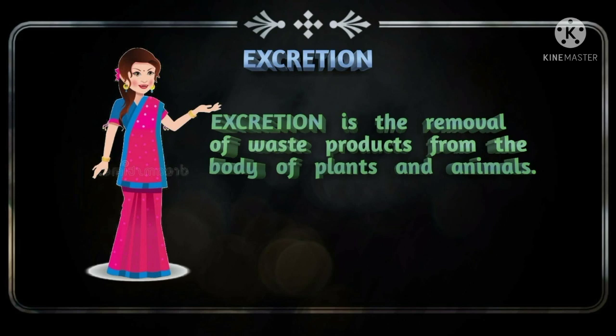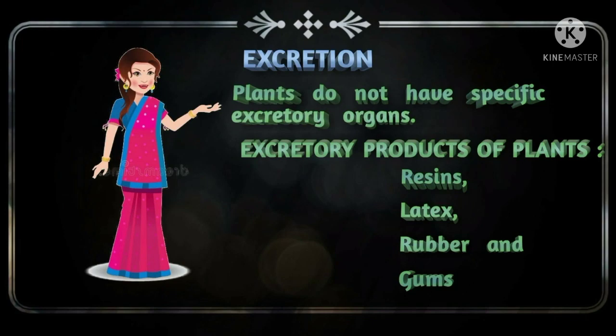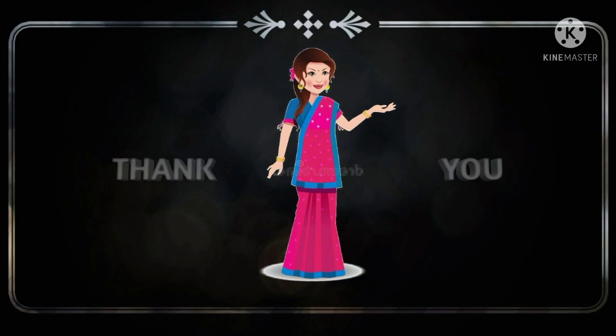The excretory organs in animals are skin, lungs, kidneys, and so on. Resins, latex, rubber, and gums are some of the excretory products of plants. They are also termed as secretions. Okay, students. Hope you understood. Thank you.